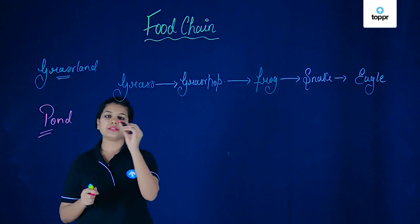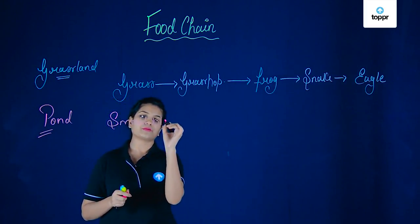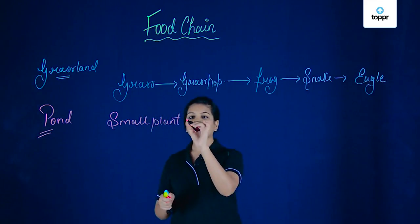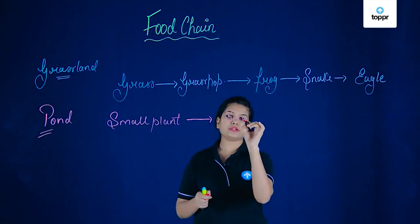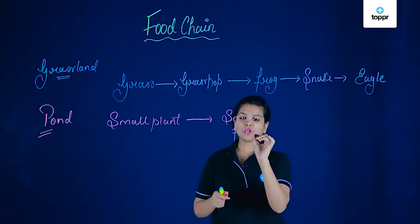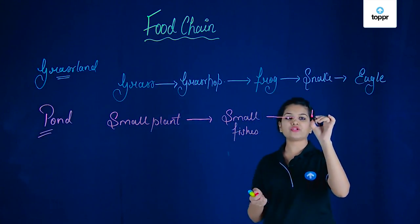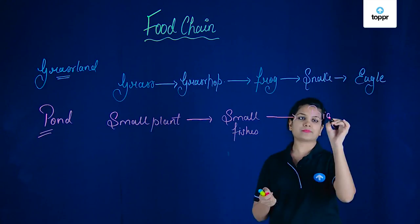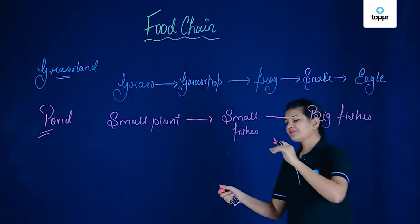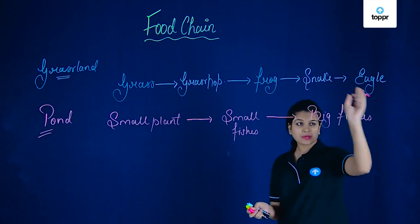Let's take another example — the pond. In a pond, you will observe that there are small plants present. The phytoplanktons, as we call these small plants, they are eaten up by tiny or small fishes. These small fishes will get eaten up by large or big fishes. So you see that this chain is going on — one thing is getting eaten up by the other and the other is getting eaten up by some other.